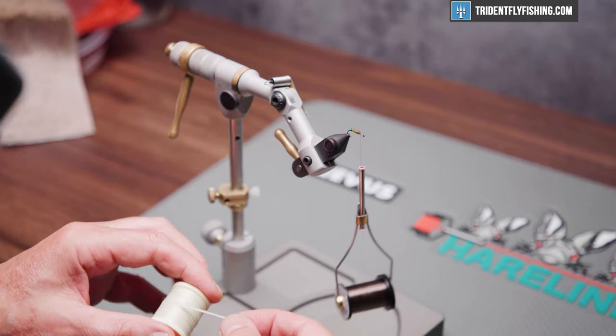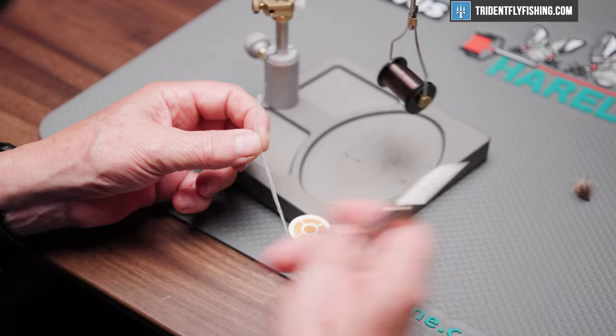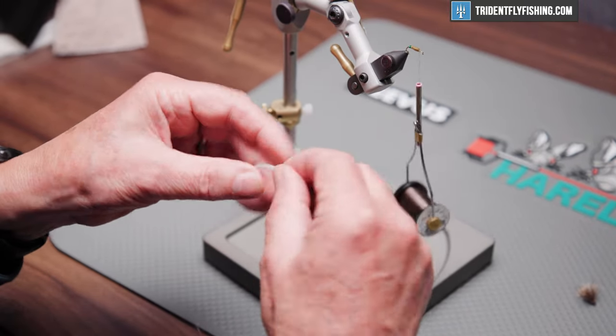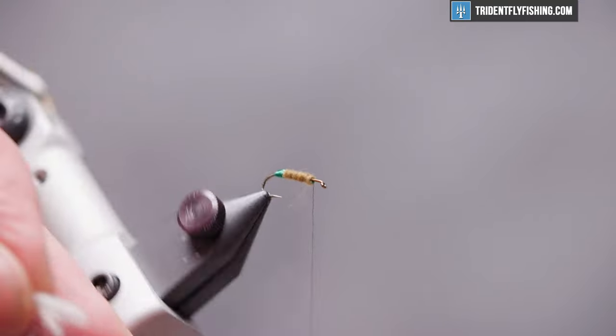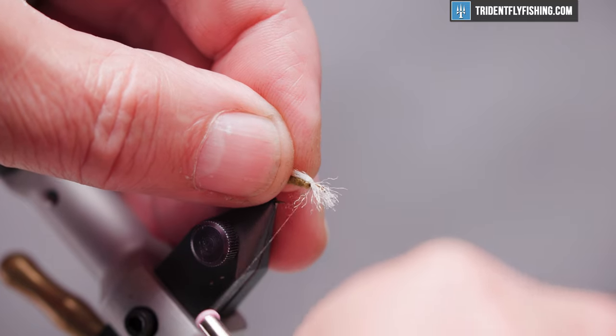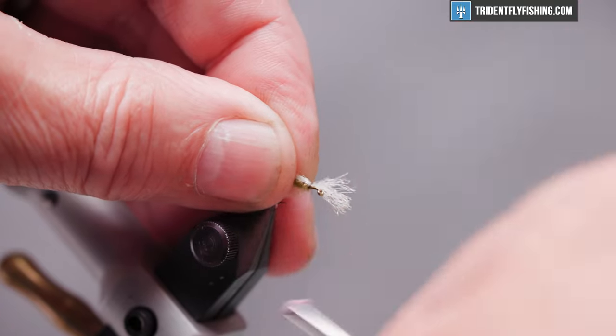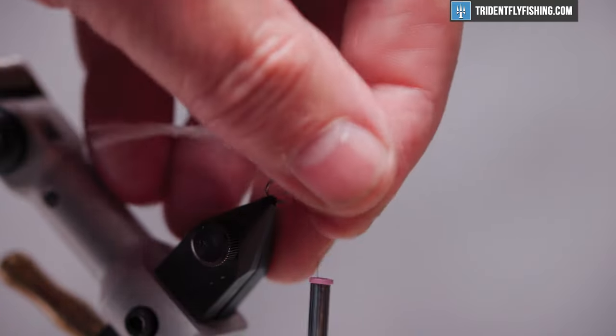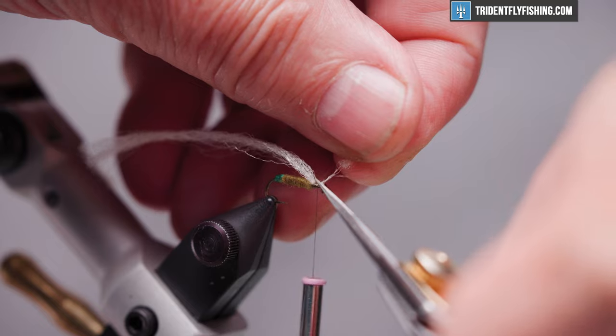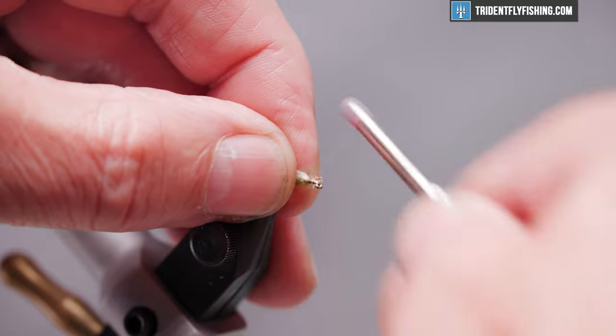Now we're going to tie in the underwing. This is just some simple Antron yarn. This will add a little bit of movement to the fly and just a little bit of sparkle. Cut off our excess here.